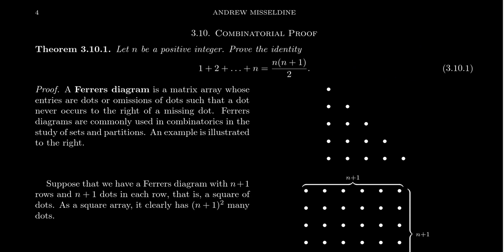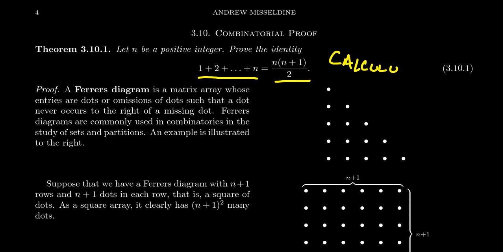Let n be a positive integer - though this statement is true for n equals 0 as well. We'll prove the identity 1 + 2 + 3 + 4 + 5 + ... + n = n(n+1)/2. This is a classic formula that students typically see for the first time in Calculus 1 - for SUU students that's Math 1210 - as they're preparing to learn about Riemann sums, the object we study before introducing the definite integral as a limit of a Riemann sum.